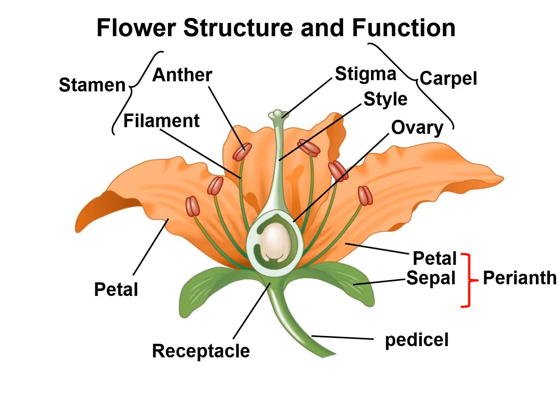Okay, students. The main parts of flower are shown in this figure. A flower consists of male and female reproductive structures. They include the stamen, pistil, petal, and sepal.